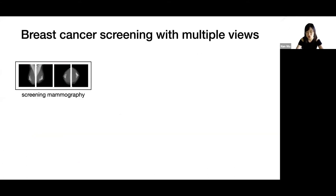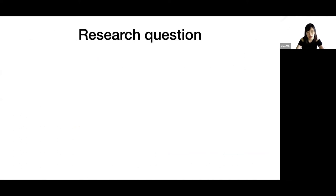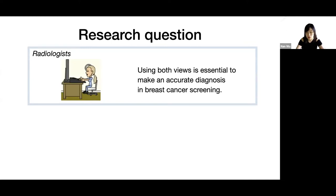In breast cancer screening, it's very common to acquire images as multiple views or slices of the breast. Specifically in screening mammography, images are taken from the side and the top of the breast. They consist of two central views named medial lateral oblique and cranial caudal, shortened as MLO and CC. It has been demonstrated in literature that for radiologists, using both views is essential to make an accurate diagnosis.